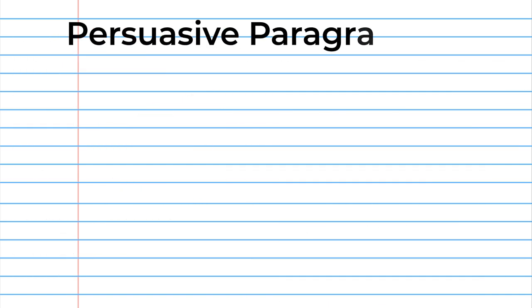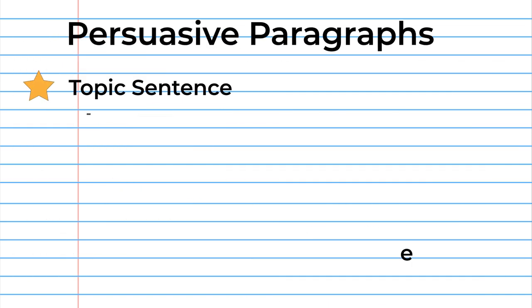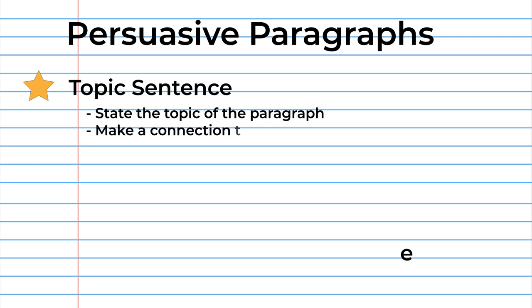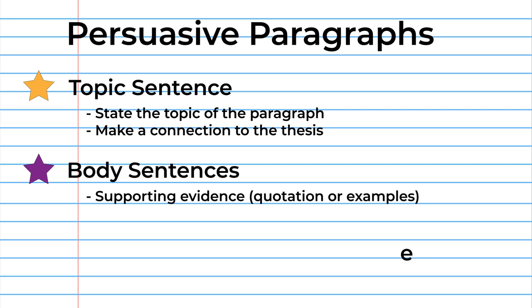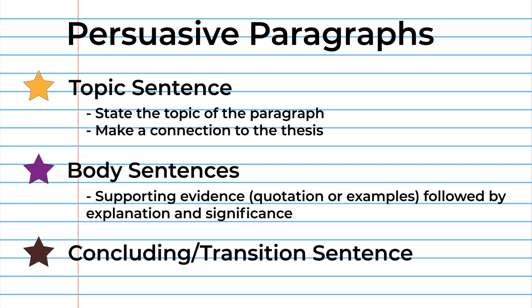Let's review. The topic sentence should clearly state the topic of the paragraph and make a connection to the thesis. The body of the paragraph includes the supporting evidence, such as a quotation or examples, followed by an explanation of the quotation and its significance. The concluding or transition sentence should restate the main point. These elements make up a persuasive paragraph.